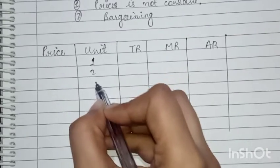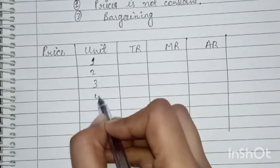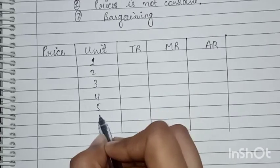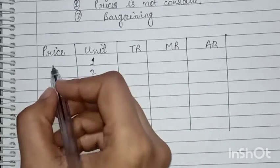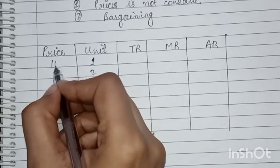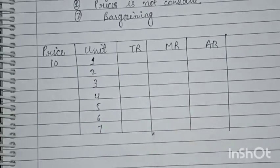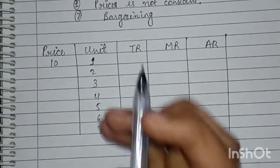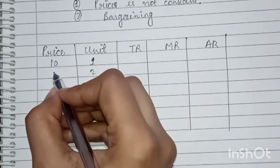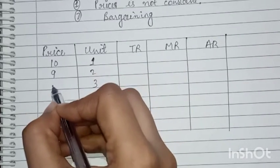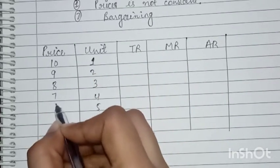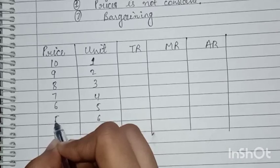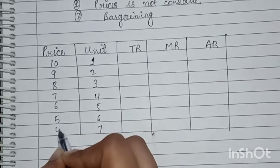For units we have 1, 2, 3, 4, 5, 6, 7. For price, since price is not constant, we have 10, then 9, then 8, 7, 6, 5, 4 — price is falling as units increase.